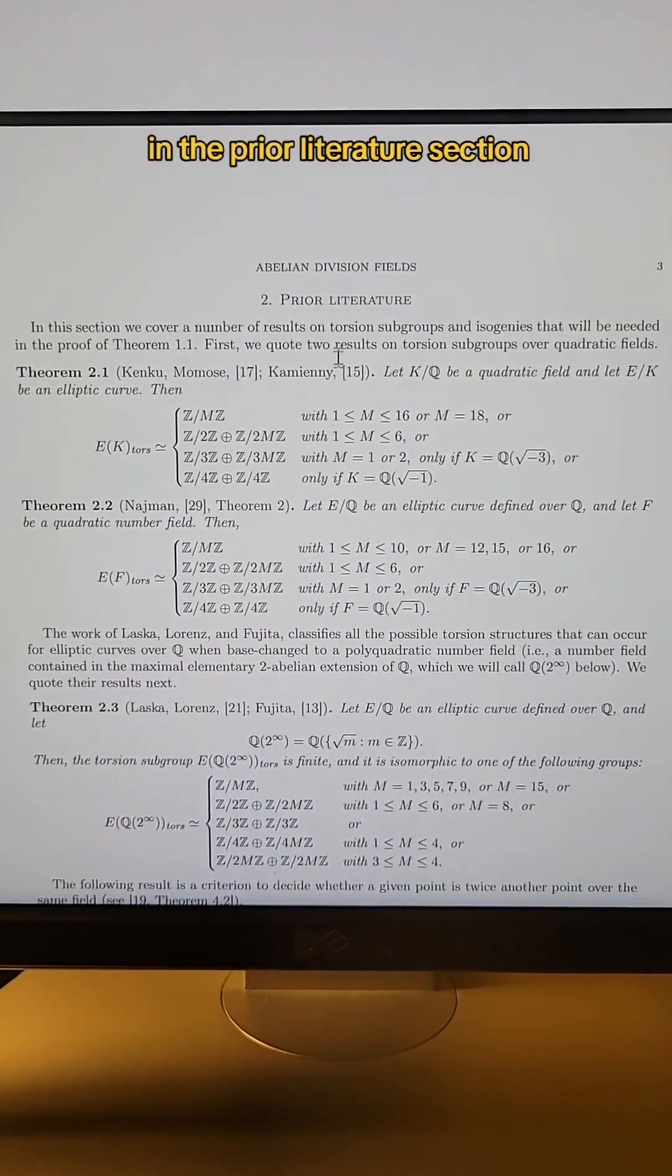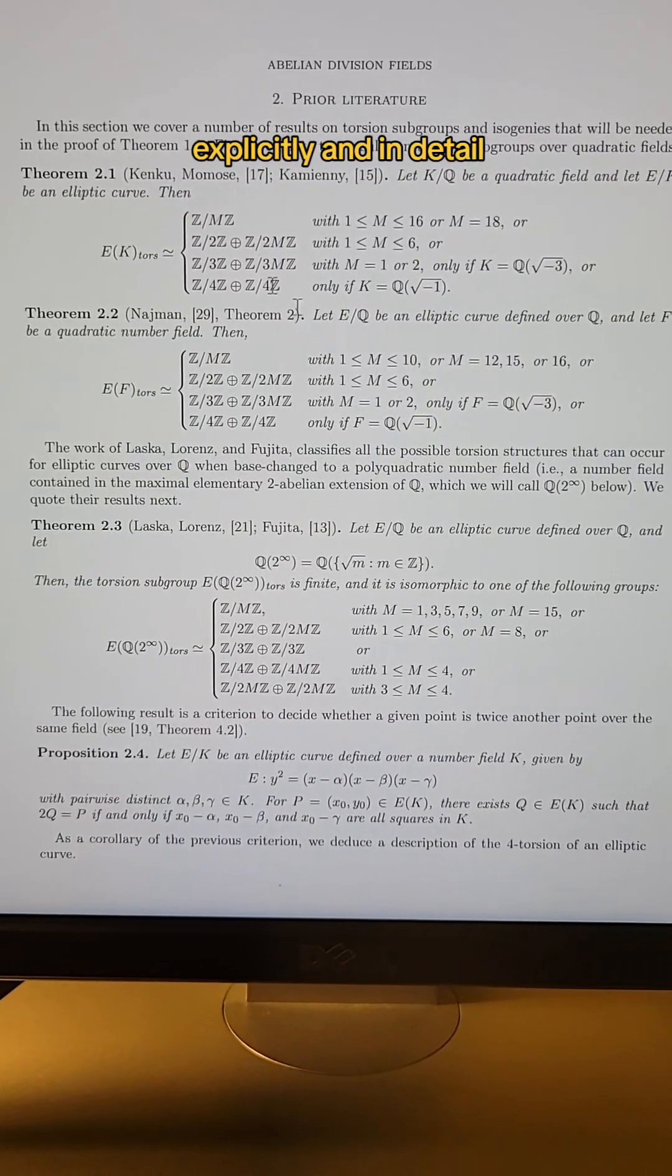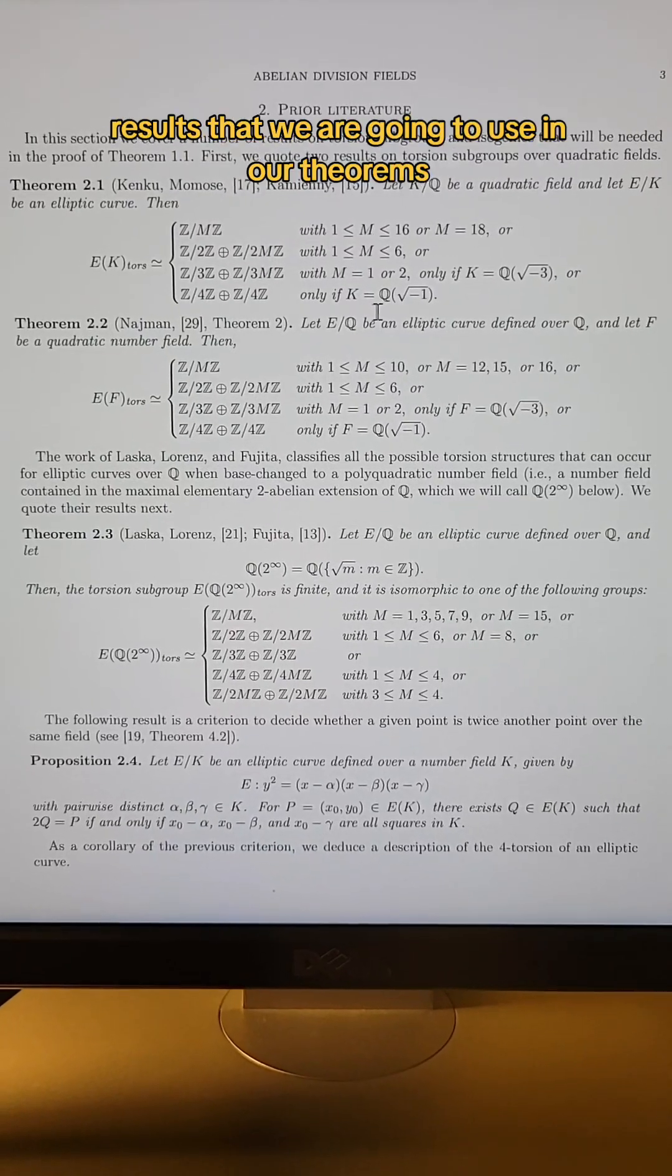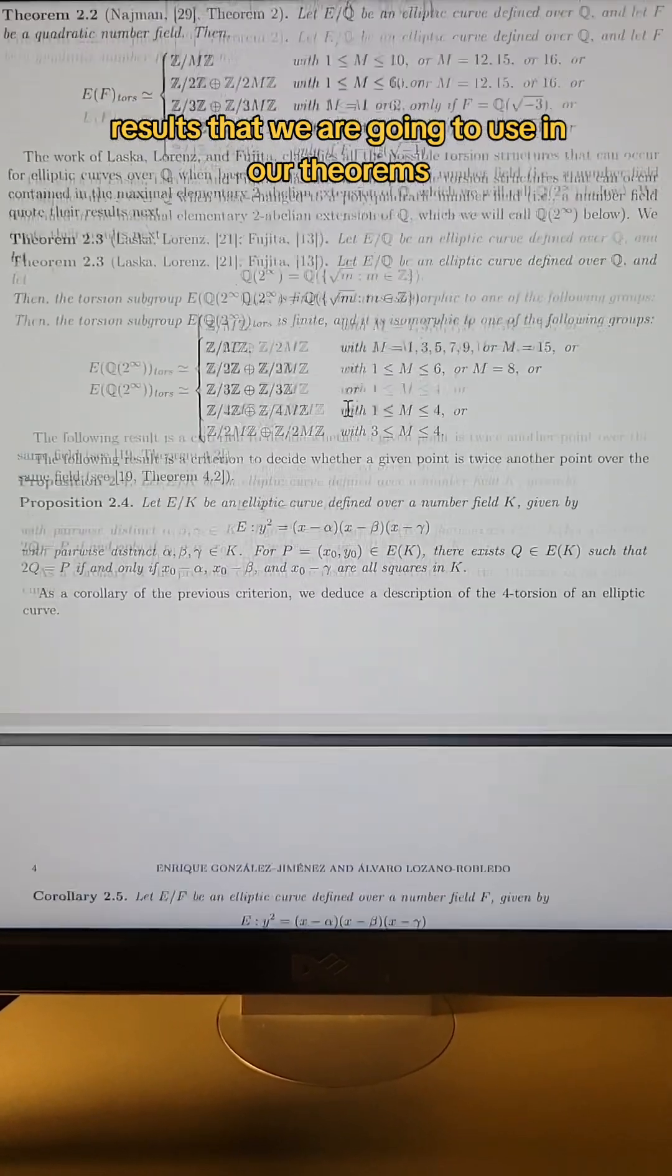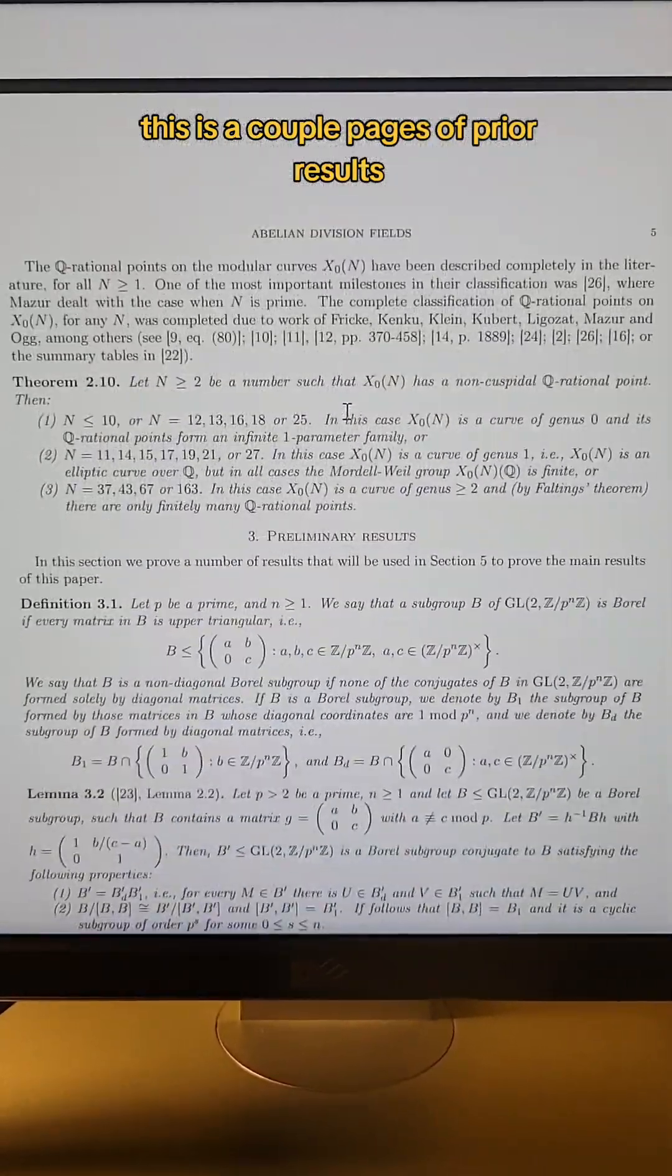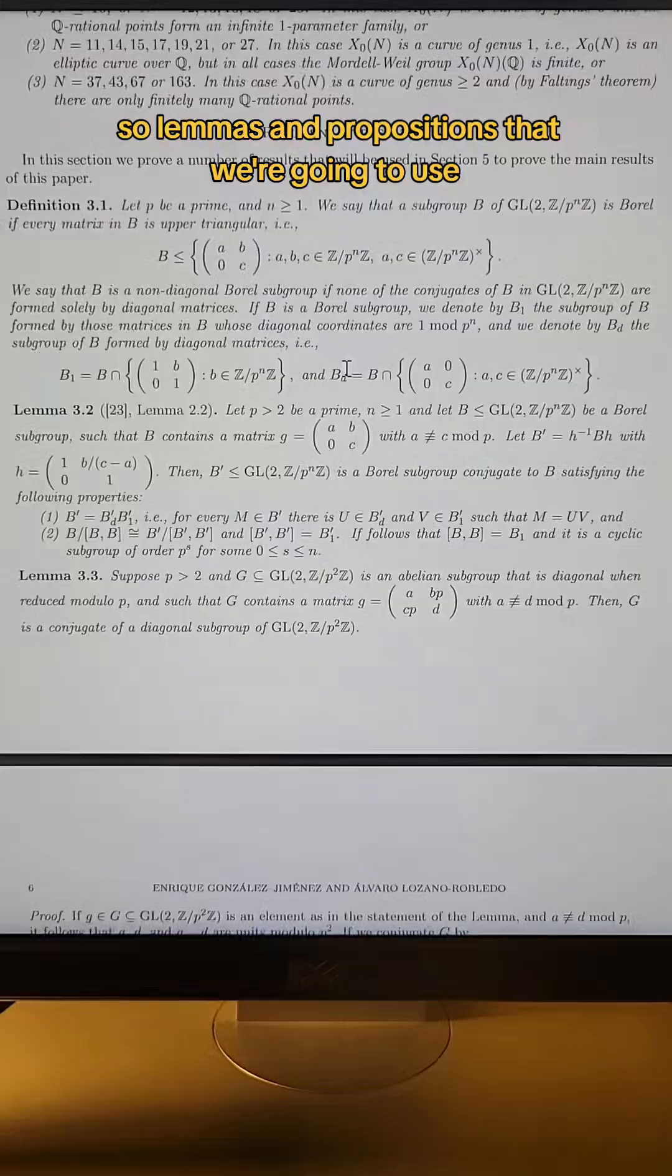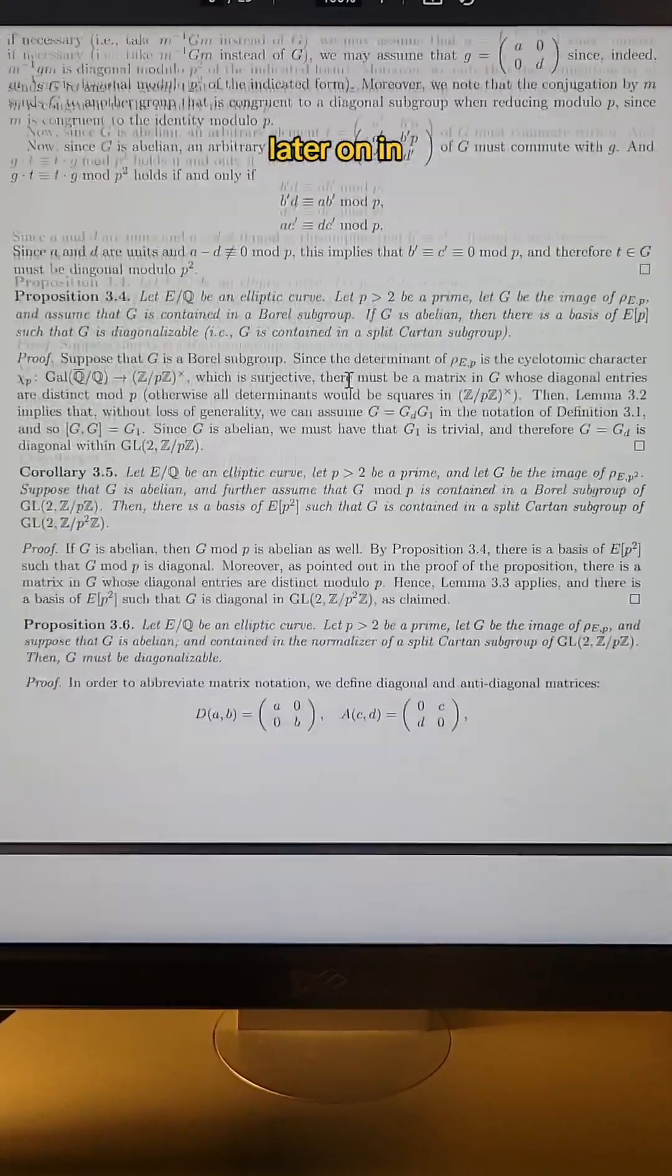In the prior literature section, we cite papers and results explicitly and in detail, results that we are going to use in our theorems. This is a couple pages of prior results. And then we start with our preliminary results, so lemmas and propositions that we're going to use later on.